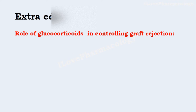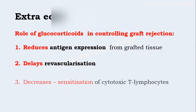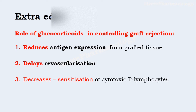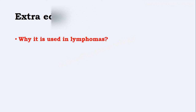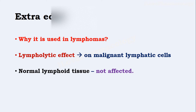Coming to the role of glucocorticoids in controlling graft rejection. Basically in graft rejection, it reduces antigen expression from the grafted tissue, delays revascularization, and decreases the sensitization of cytotoxic T lymphocytes. Next, why are glucocorticoids useful in lymphomas? Because they have lympholytic activity — meaning they decrease lymphocyte cells, especially malignant lymphatic cells. However, on normal lymphoid tissue they do not show any effect.